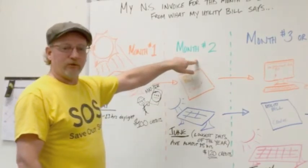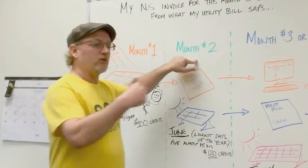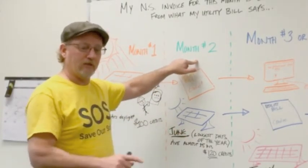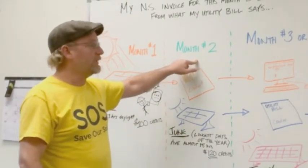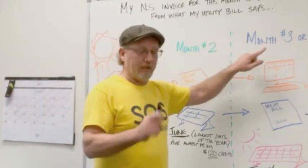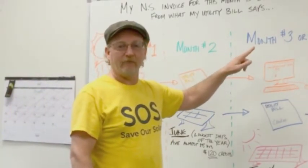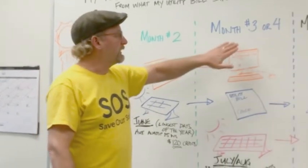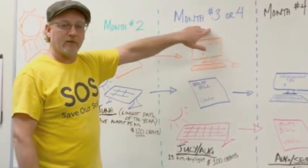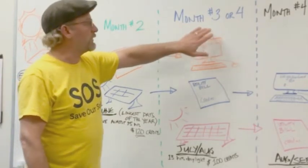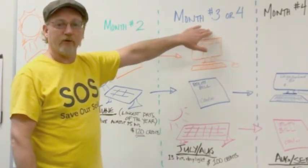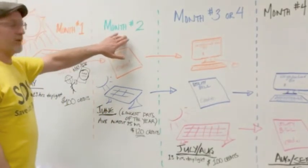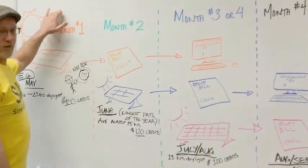During month number two, the utility lets us know how much credit they issued to each subscriber. And so again, depending on your utility, how fast they are getting that information to us, when your billing cycle starts and stops, it's month number three or perhaps month number four that you actually see the invoice for those credits that were received in month number two from the electricity that was generated in month number one.